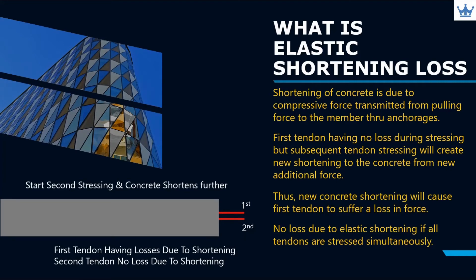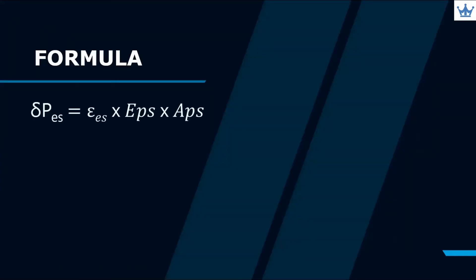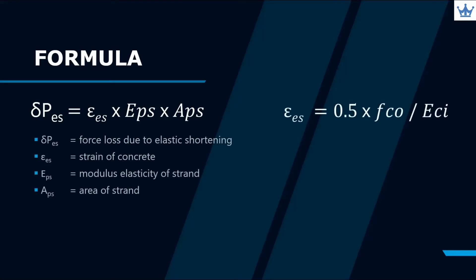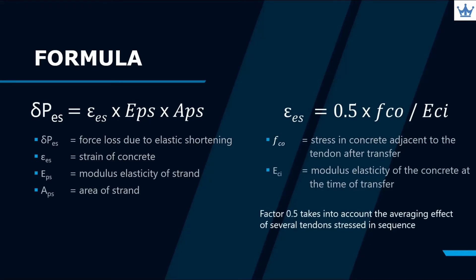Refer to the formula shown for elastic shortening loss. We need to identify the strain of concrete by adopting a 0.5 factor which takes into account the averaging effect of several tendons that were stressed in sequence. Here, we can find the loss of force due to elastic shortening.